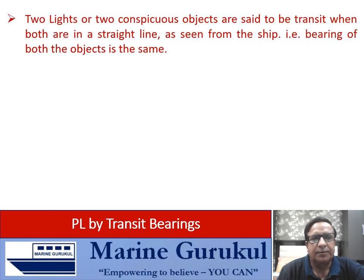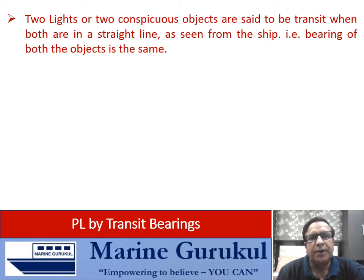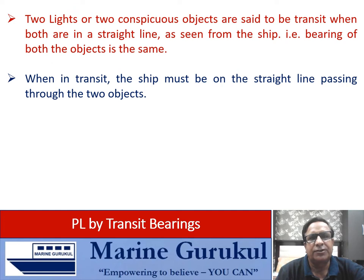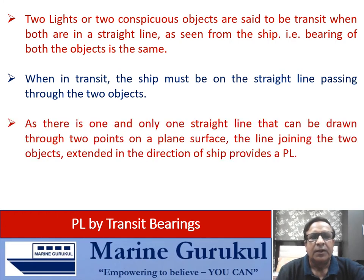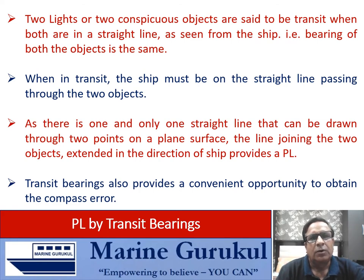PL by transit bearing: two lights or conspicuous objects are said to be in transit when both are in a straight line as viewed from the ship — that is, the bearing of both objects is the same to the observer. When in transit, the ship must be on a straight line passing through those two conspicuous points. The line joining the two objects, extended toward the ship, provides the PL. Transit bearings also provide a convenient opportunity to obtain compass error.